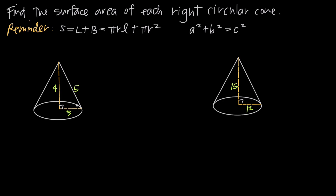When we have a right circular cone, we always use the surface area formula. Surface area is equal to L plus B, where L is the area of the lateral face — the area of the side of the cone — and B is the area of the base, or the area of the bottom.